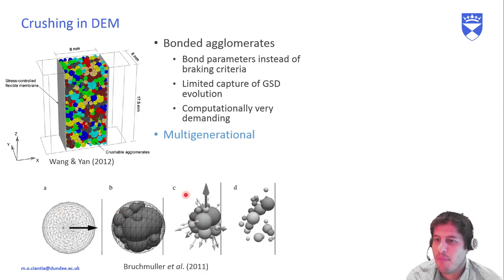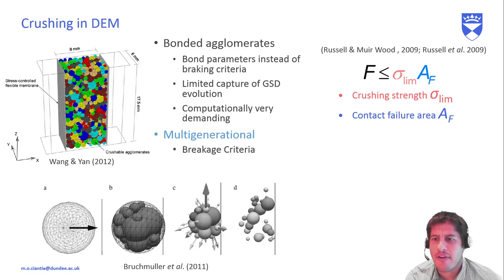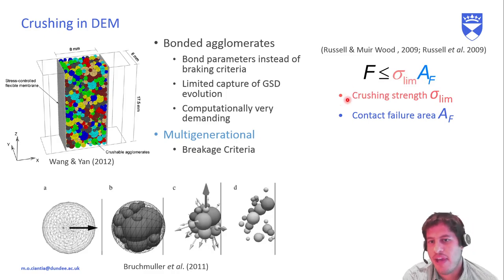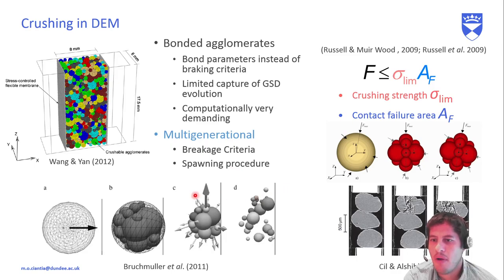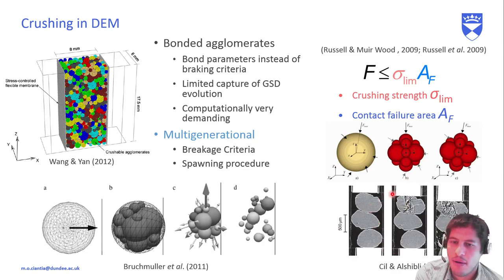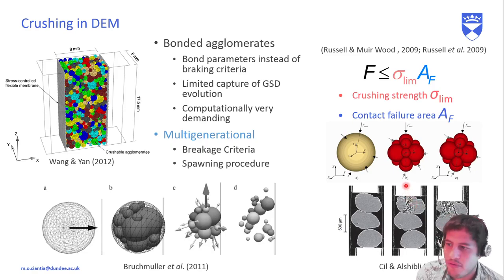In the multi-generational approach we need a failure/breakage criterion. We were inspired by work in the literature on contact forces on elastic spheres, which can be rewritten as: the force at the contact should be smaller than a strength times the contact area at failure. Once you have a limiting breakage criterion, you also need a spawning procedure — a fragmentation model — so the mother particle is substituted by daughters in a defined pattern. We arrived at a 14-daughter splitting configuration.